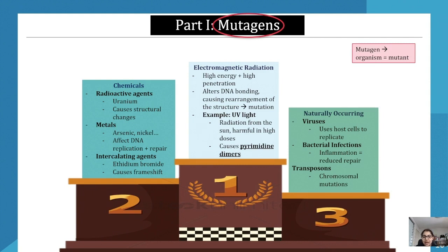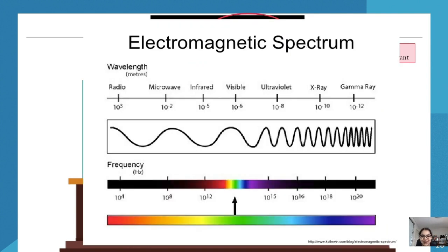Radiation from the sun can be super harmful in high doses, and as a result it can cause pyrimidine dimers — that is when the bases sort of... actually there's an image here. I was trying to explain it with my hand, but I've got an image for us.